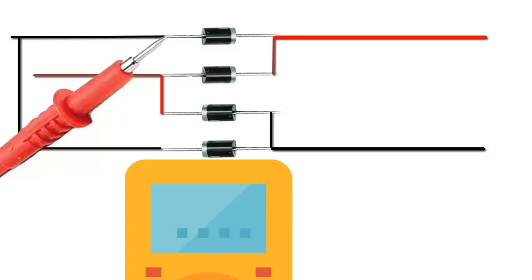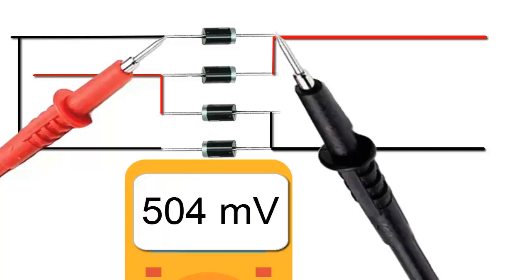Third, connect the test leads to the first diode. Fourth, connect the red probe of the multimeter to the anode, the positive terminal, of the first diode. Fifth, connect the black probe of the multimeter to the cathode, the negative terminal, of the first diode. Sixth, record the measurement shown. The multimeter will emit a small bias voltage between the test leads and display the voltage drop across the diode.